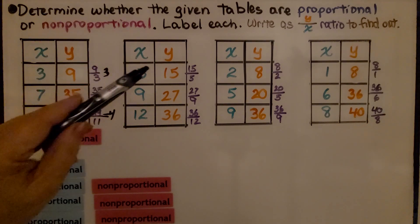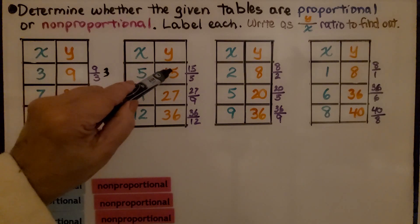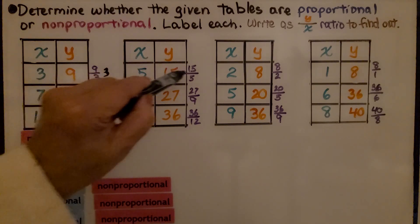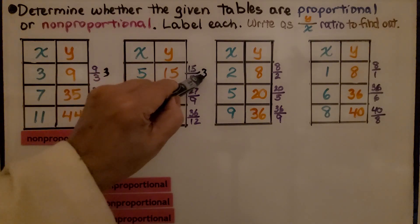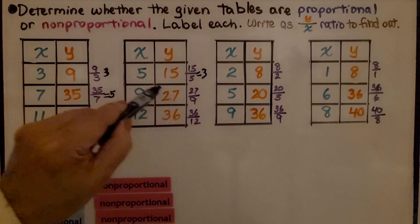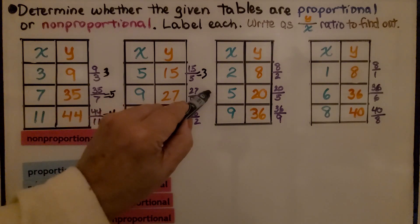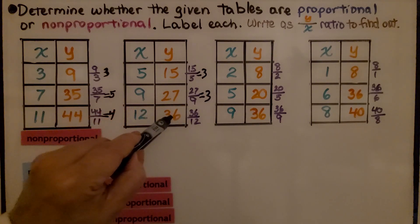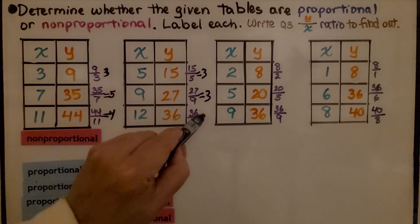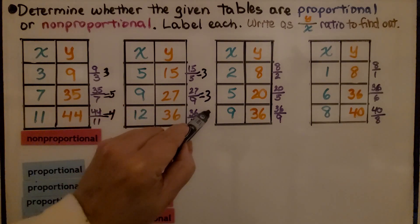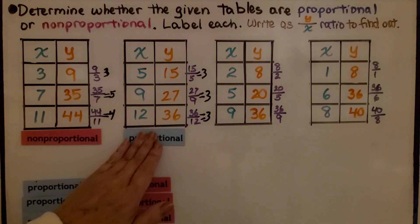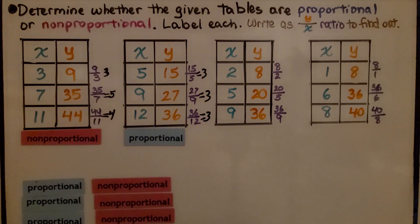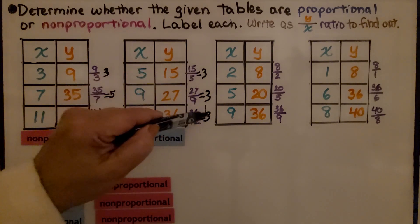If we look at this one, we have 15 fifths, which equals 3. We have 27 ninths, which equals 3. And we have 36 twelfths, which equals 3. That is proportional. We have a constant rate of change — it's all 3.